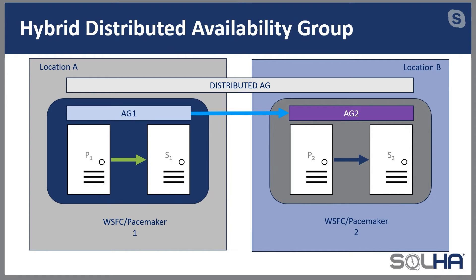The other nice thing about distributed availability groups is that you can flip the script. Meaning, if I flipped up to Azure during a migration and needed to go back to on-premises at some point, you can do that. And when you decide everything is good, you could cut the distributed AG back down to on-premises. I have customers doing this for testing DR every couple of months — flipping from on-premises to Azure and back. It's pretty elegant when it's all working, but understand that from a SQL Server perspective, this is a little more complex.